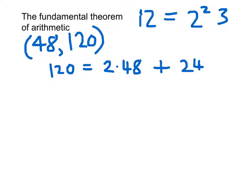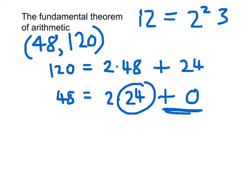Then I do the same with 48 in terms of 24. 48 is 2 times 24, add 0, and when I get to the add 0 bit, that tells me that this number here is the greatest common divisor. So 24 is the greatest common divisor of 48 and 120.